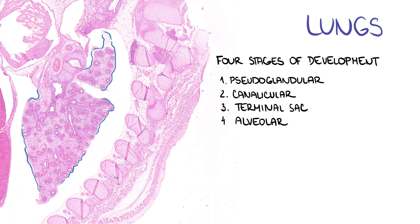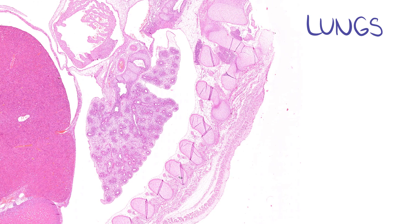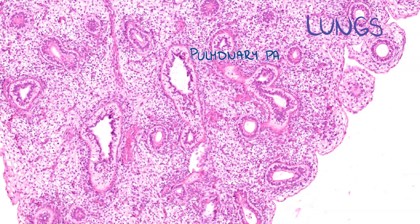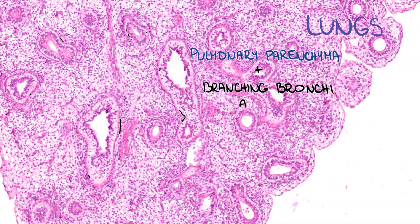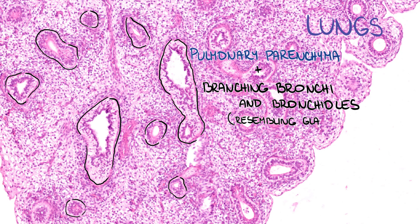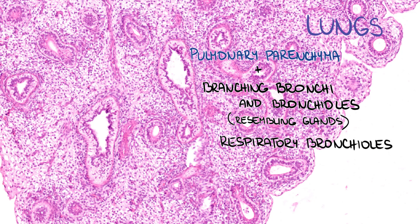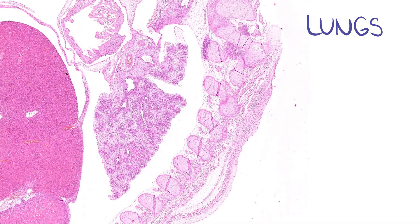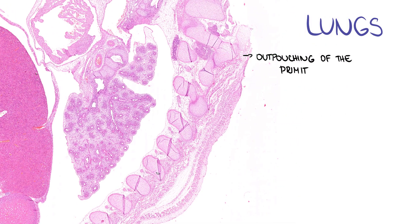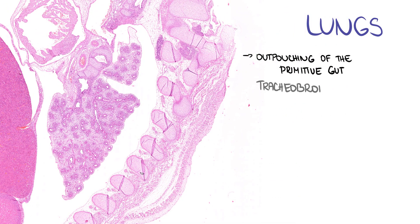In this case we can see the pseudoglandular stage, the first stage of lung development, which lasts until the 16th week of fetal development. We can see a developing pulmonary parenchyma and branching bronchi and bronchioles, resembling glands — therefore this stage got its name. Respiratory bronchioles are not developed, so these lungs are not yet capable of exchanging gases. Lungs are developed as an outpouching of the primitive gut, called the tracheobronchial diverticle.